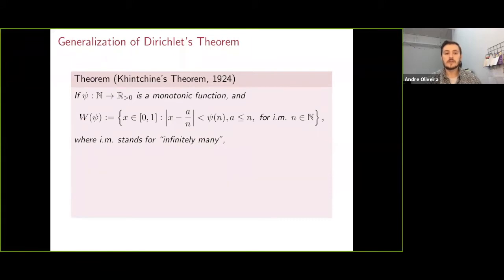That is, what if we take some function psi that's monotonic and we look at the set of elements x that get within psi of n of these rationals a over n for infinitely many of these rationals?